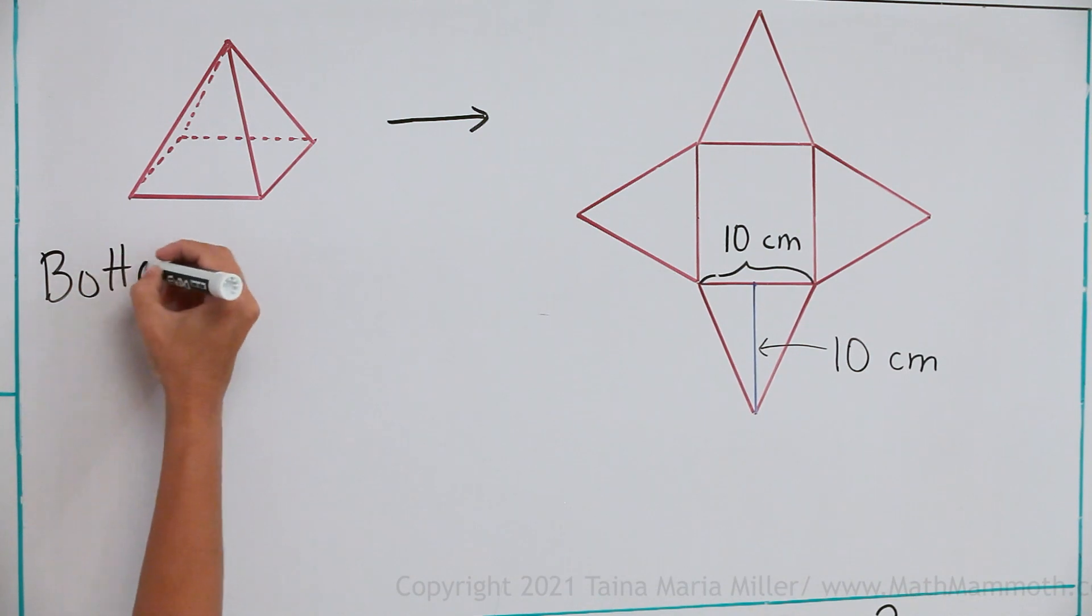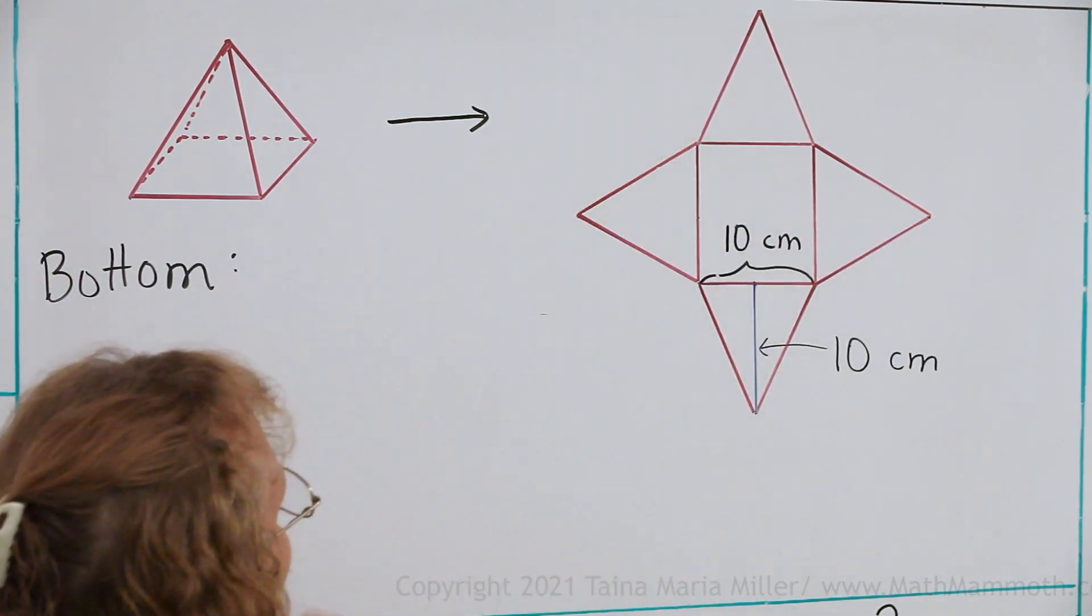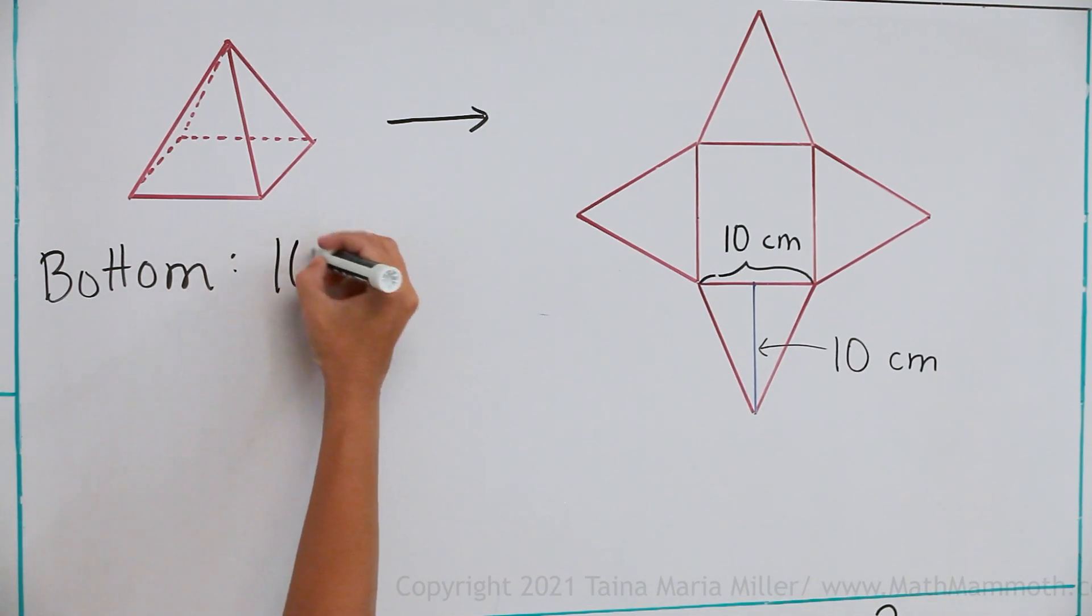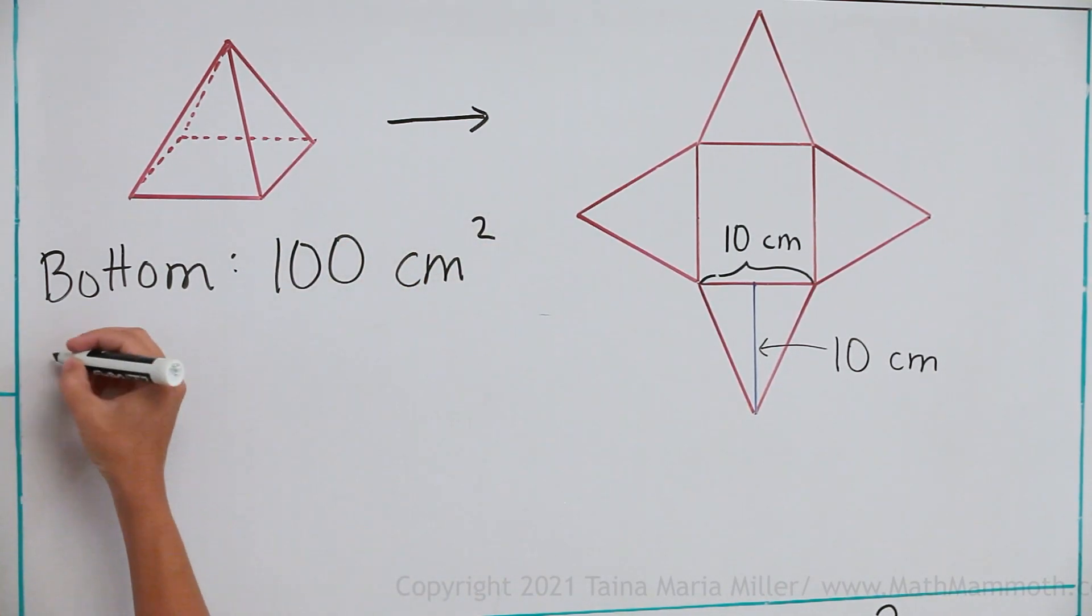So the bottom, that's easy, it's a square. 10 cm times 10 cm gives us 100, and the unit is square cm. And then one triangle.